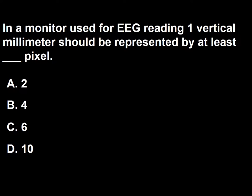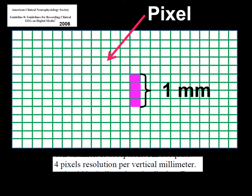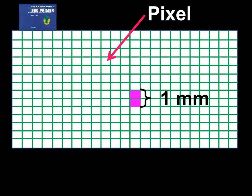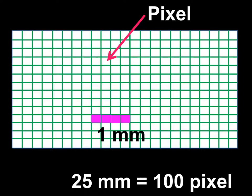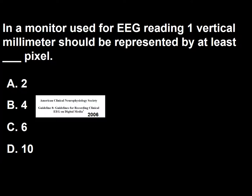Next question: In a monitor used for EEG reading, one vertical millimeter should be represented by at least how many pixels? A, 2; B, 4; C, 6; D, 10. The American Clinical Neurophysiology Society in 2006 recommended at least 4 pixels per vertical millimeter. The EEG primer recommends at least 2 pixels per millimeter. Both agree that horizontal resolution should be at least 4 pixels per millimeter. So the answer to this question is B.